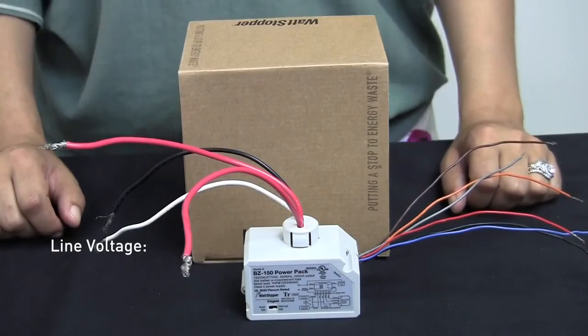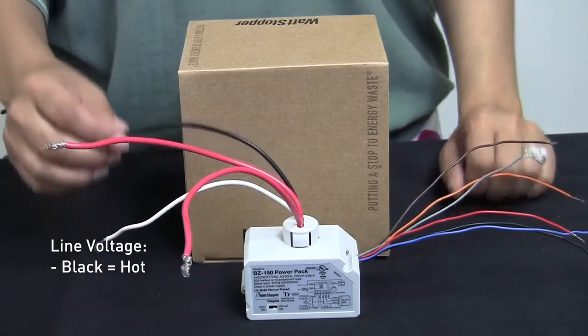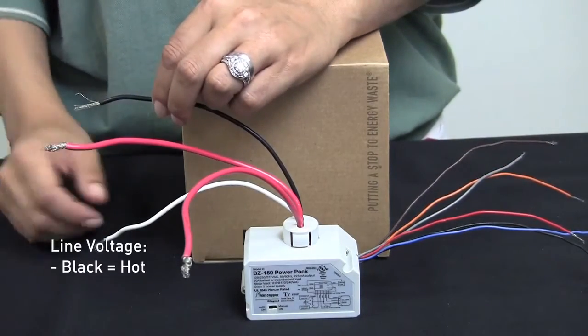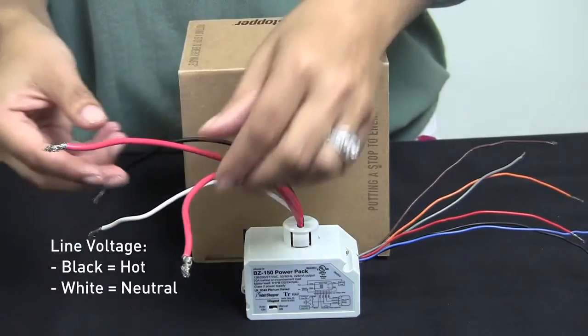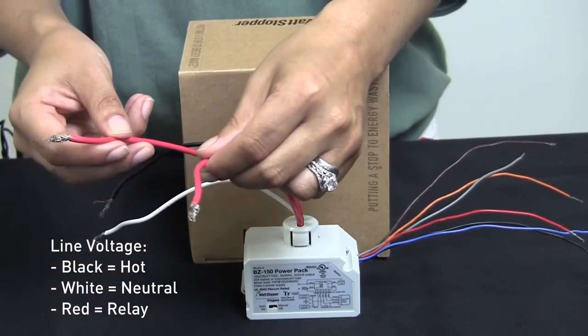The line voltage connections on the BZ150 consist of a black wire which goes to the hot, a white wire which goes to the neutral, and your two red wires which are on either side of your relay.